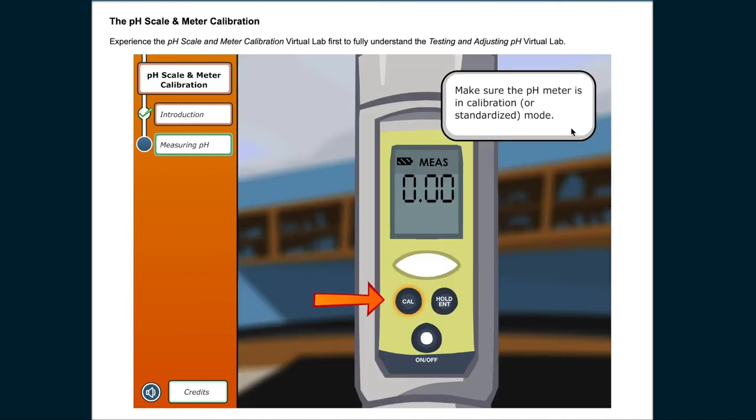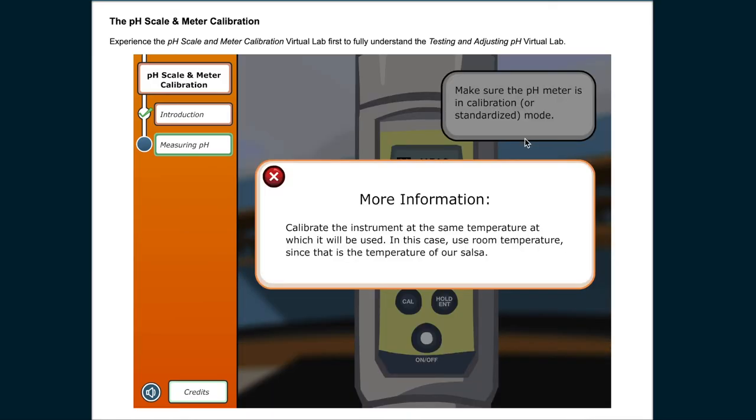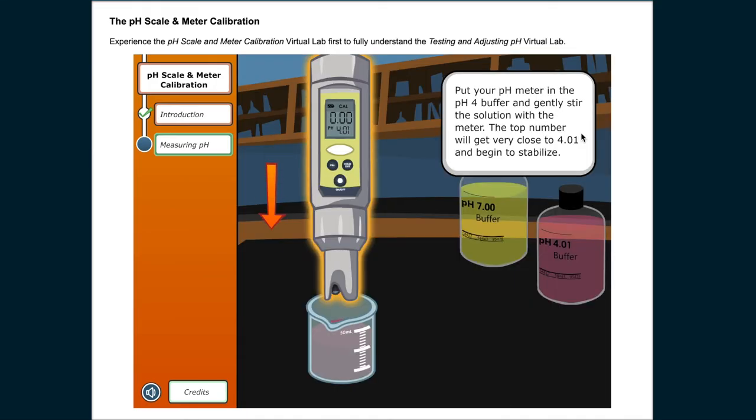Make sure the pH meter is in calibration or standardized mode. Calibrate the instrument at the same temperature at which it will be used. In this case, use room temperature since that is the temperature of our salsa.